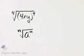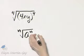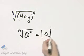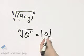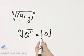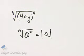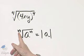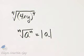and n is some positive even number, this is the absolute value of a. And I write the absolute value so that I am sure that the answer is not negative. So when we're dealing with even roots, the nth root of a to the n is the absolute value of a.